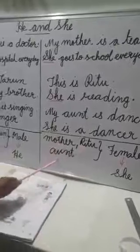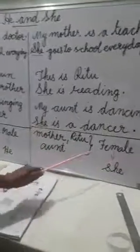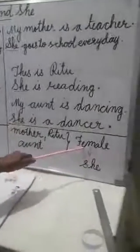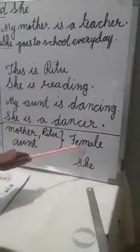Mother, Ritu, and Aunt are female, and for female we will use 'she'.